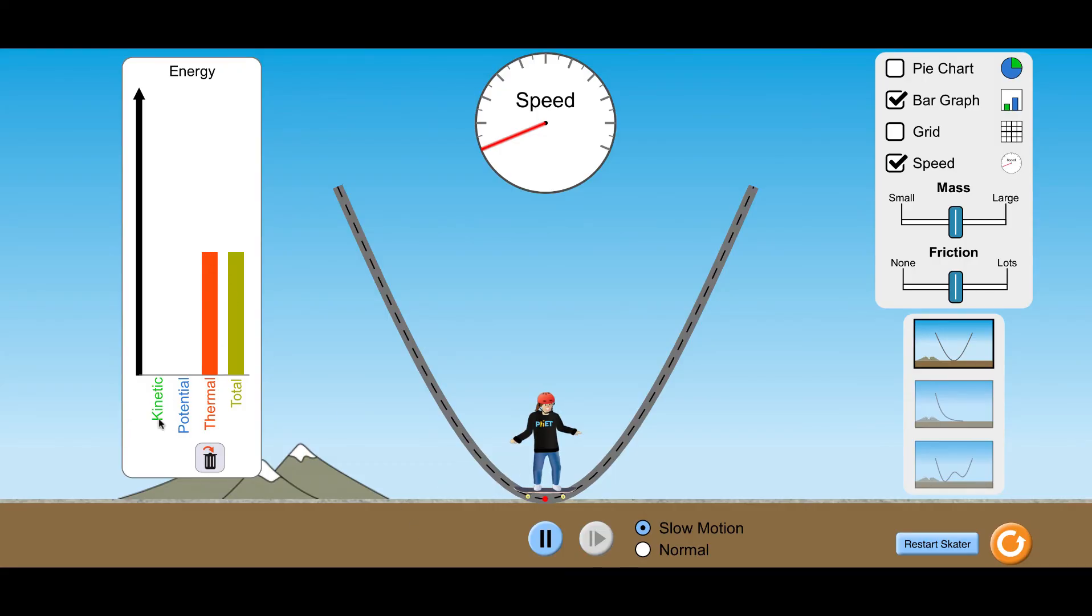So friction, thermal energy, actually slowed her all the way down to a stop. And all of that energy, all that kinetic and potential energy that she had has been dissipated, has shown up as heat in the system. So let's go one more time. This time, let's make her friction be a lot and see if it changes what happens.